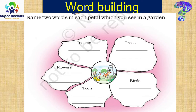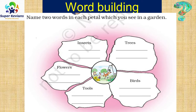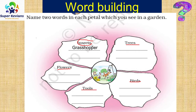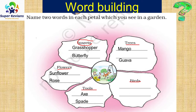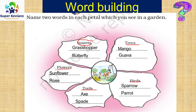Under the word building section, there is a flower diagram where in each petal you have to name two words from a category. The categories are insects, trees, flowers, birds and tools. For insects, you can write grasshopper and butterfly. For flowers, sunflower and rose. For tools, axe and spade. For trees, mango and guava. For birds, sparrow and parrot. You can write your own words too, whatever you know under each category.